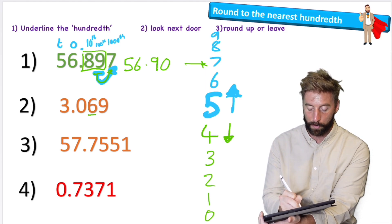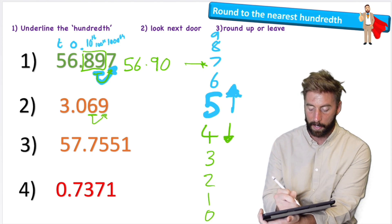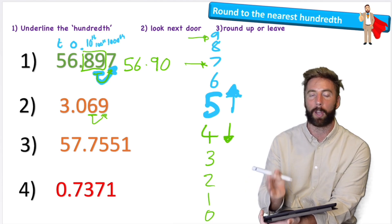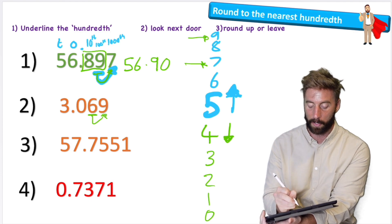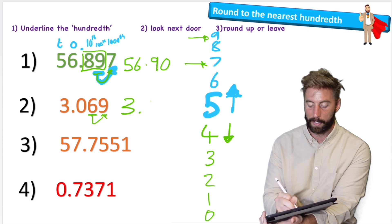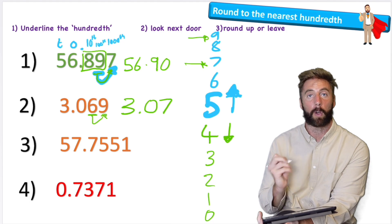Question two. This time a six is in my hundredths column and I'm simply going to look next door. I have a nine. Well, the nine is all the way up here and remember five or more let it soar. So the nine is going to turn my six into a seven. So now instead of having 3.06, I have 3.07, seven hundredths.